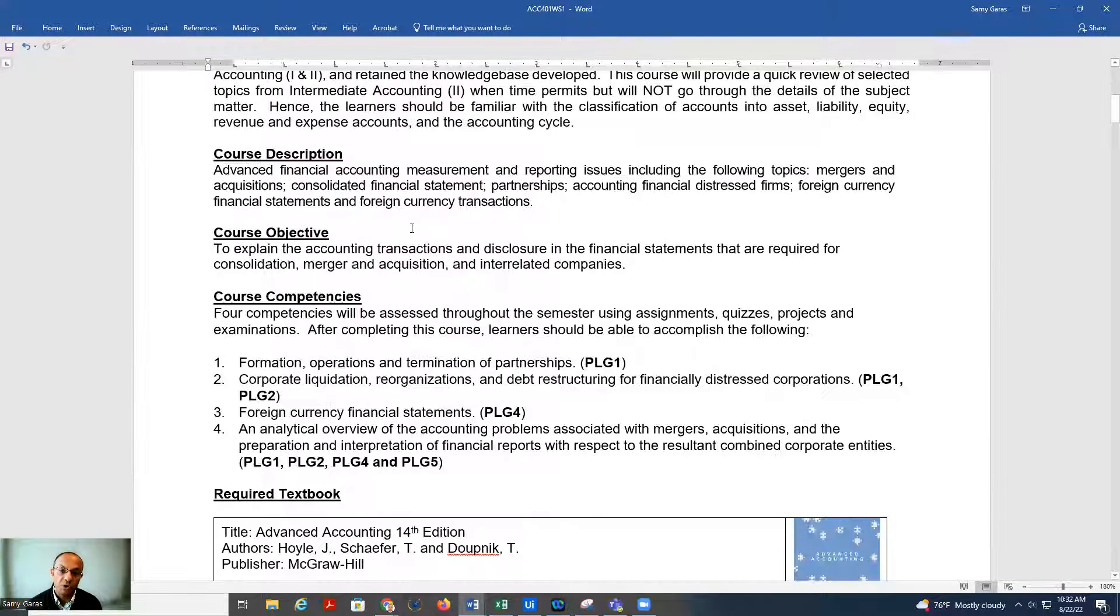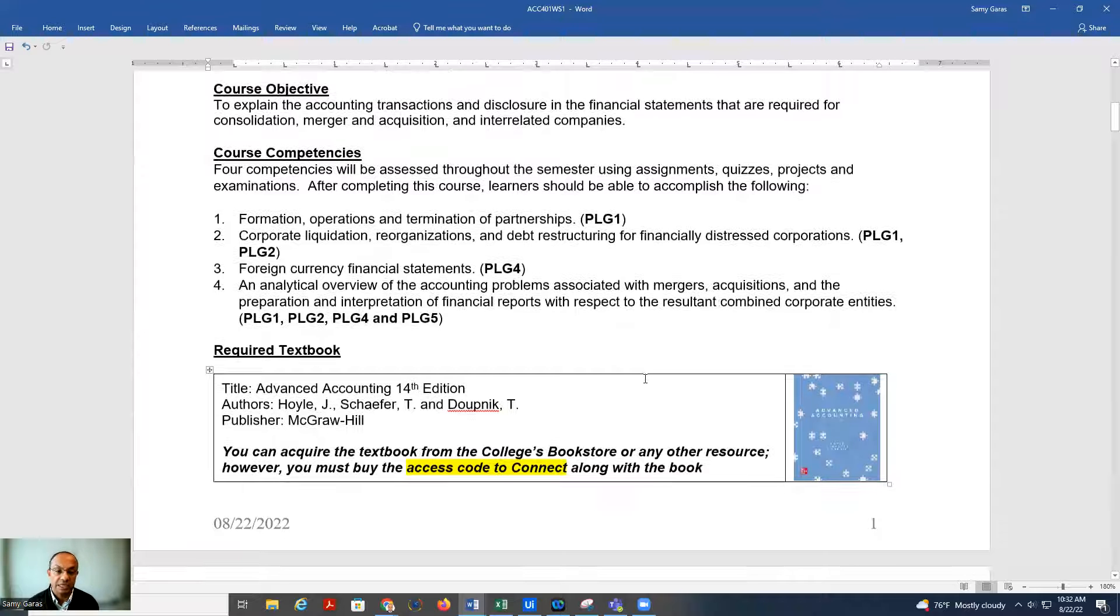The key point in this course is to cover the formation and operation of a partnership company. I believe in Intermediate Accounting you covered the corporation, but here we talk about the partnership from A to Z. Then we talk about consolidation between two companies, mainly corporations, and then we talk about how we consolidate the balance sheet, the income statement, and the cash flow. This will take the big chunk of the course.